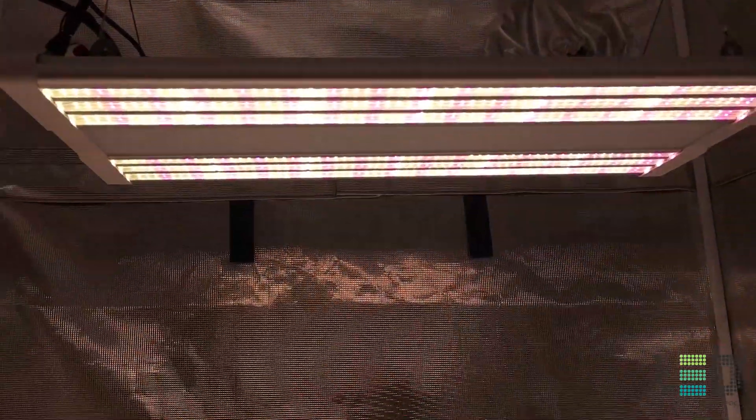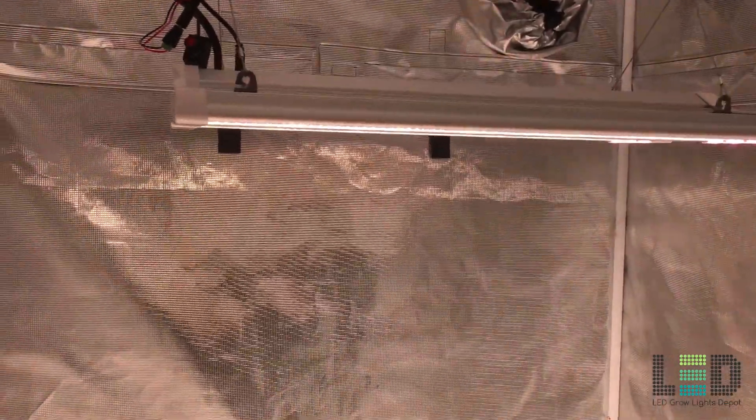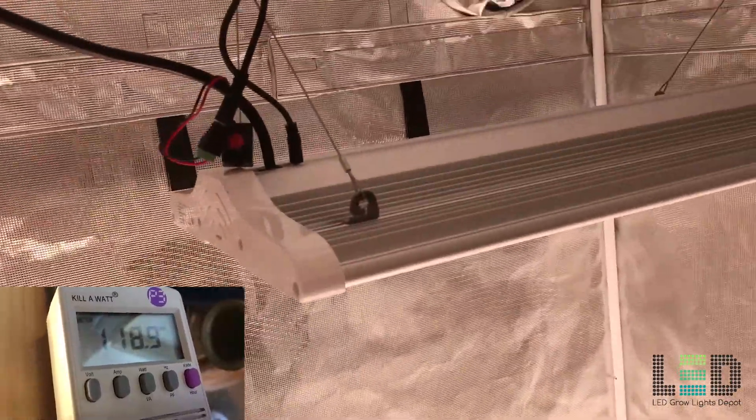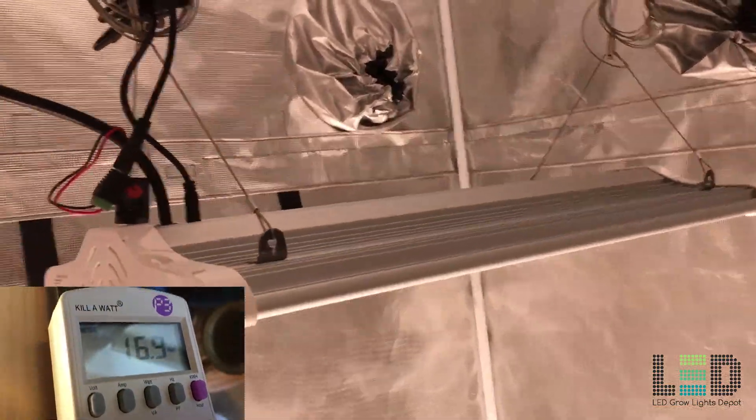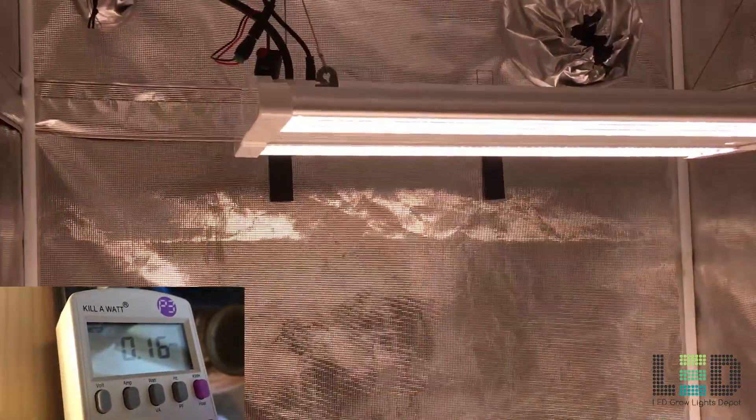Expect about 0.77 amps at 240 volts at full intensity. With the dimmer dialed all the way down to 10%, I measured 16.4 watts from the wall and 0.16 amps.